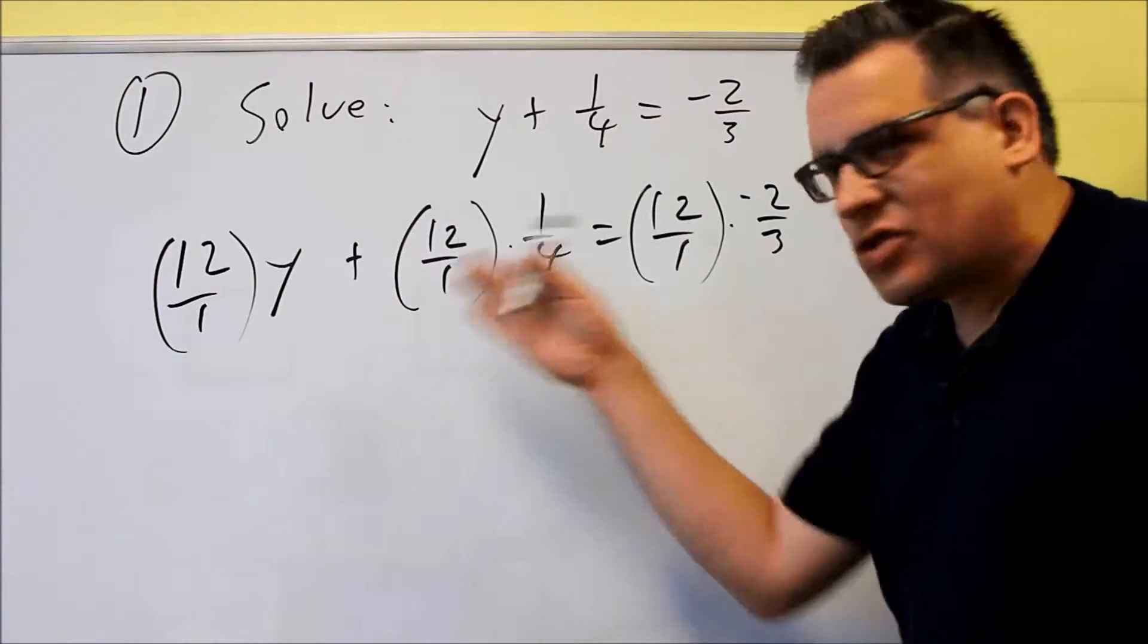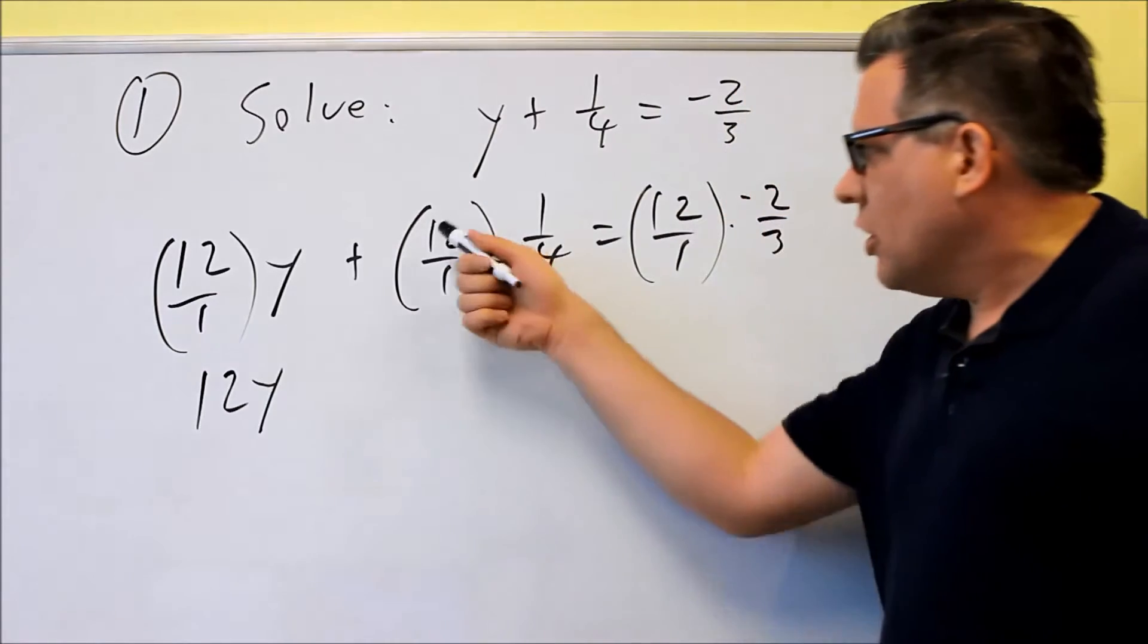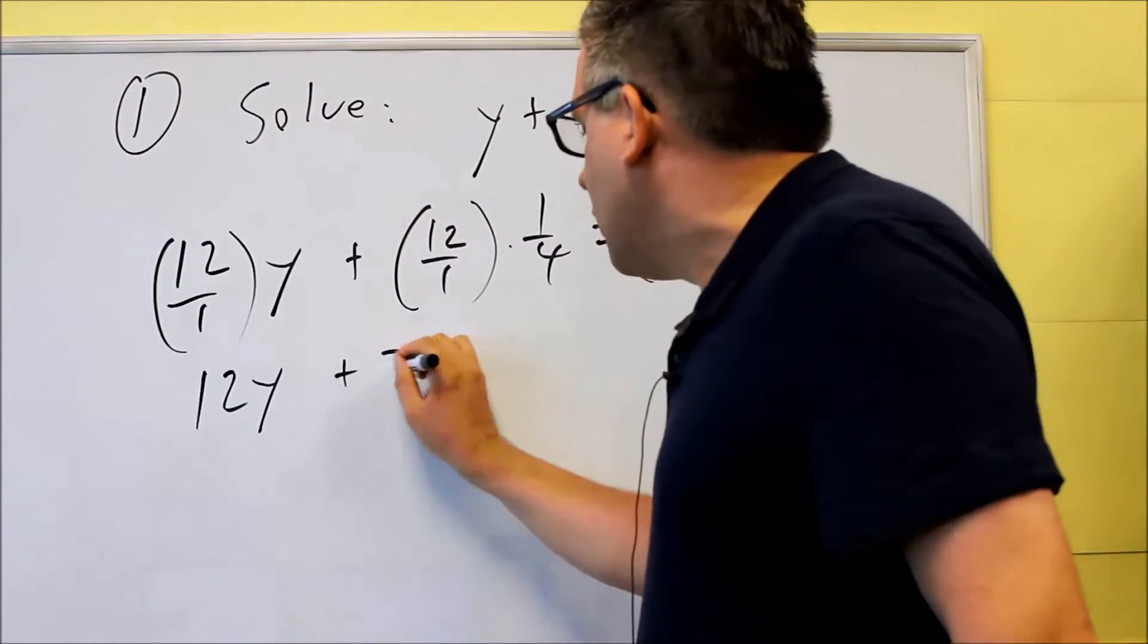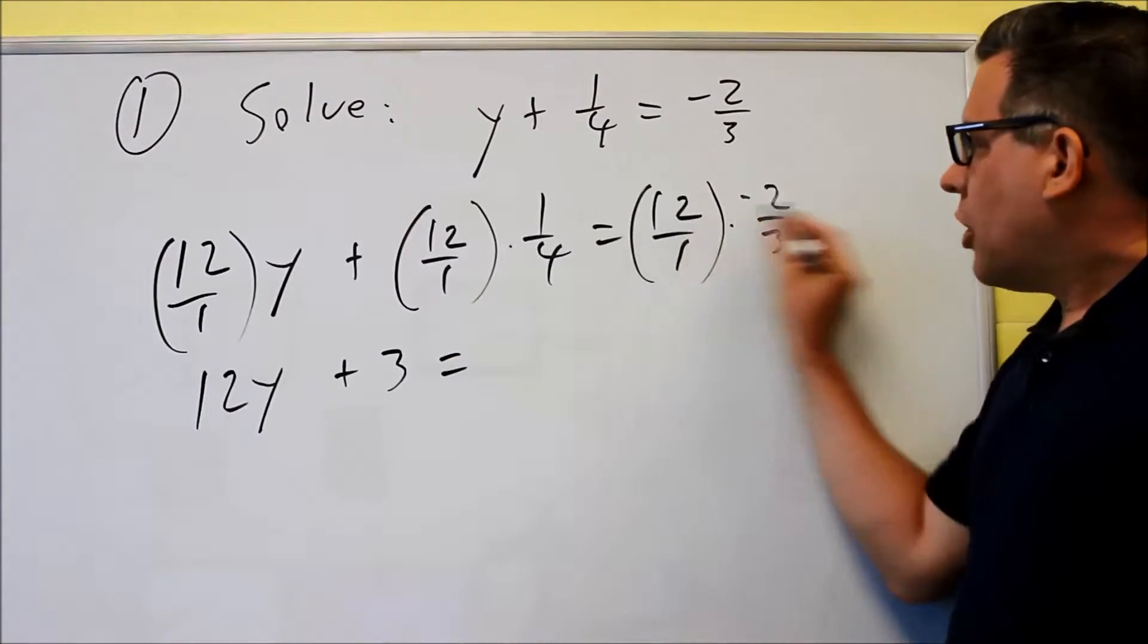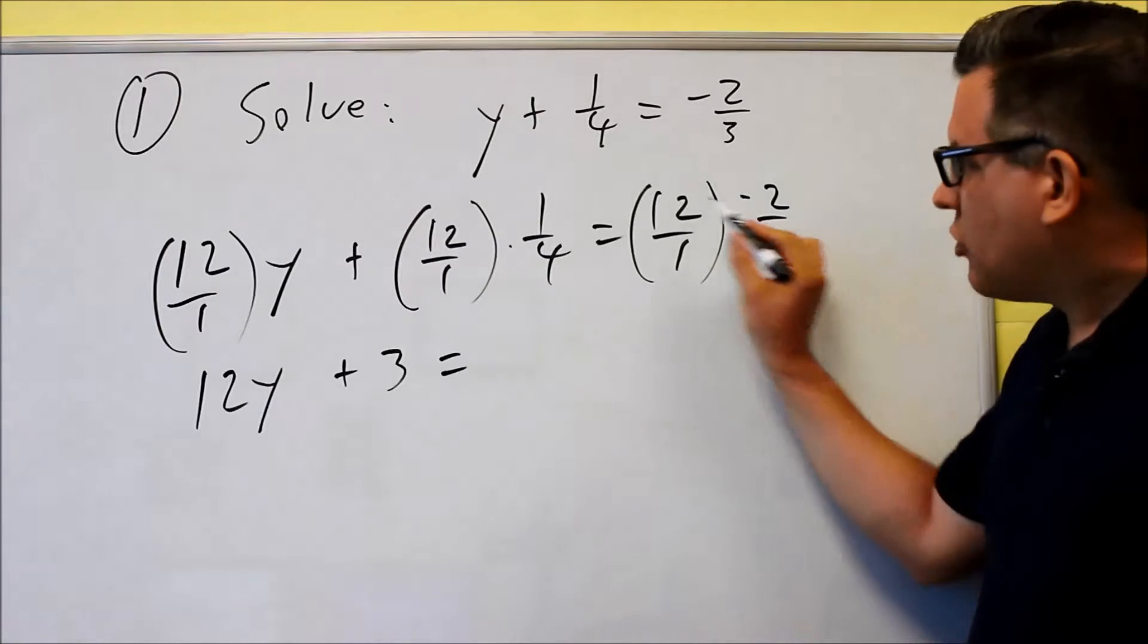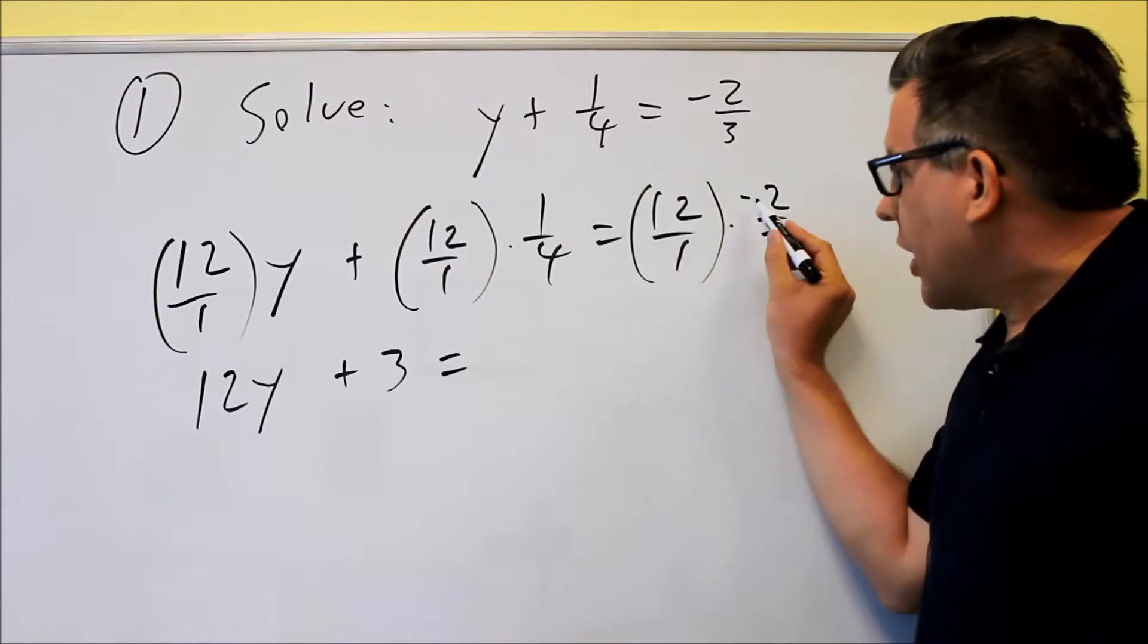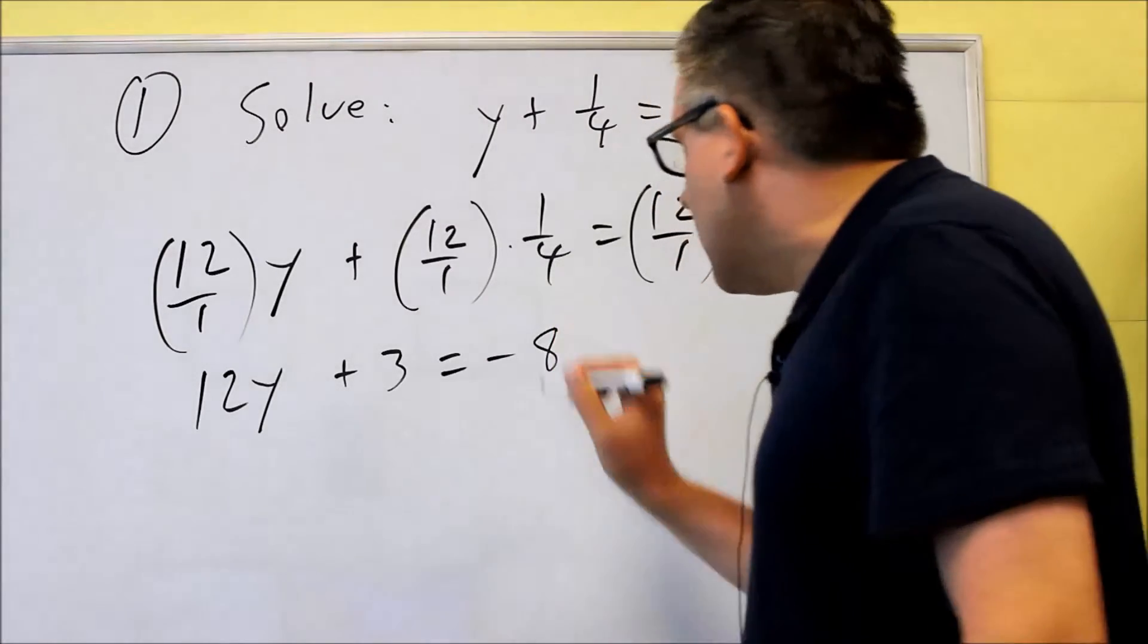Now that I have this complete, I'm going to simplify it. So I get 12y for this one. This one I get 12 divided by 4, which is just going to give me a 3. And then over here on this side, I'm going to multiply across the top and across the bottom. So when I multiply across the top I get -24. -24 divided by 3 is -8.